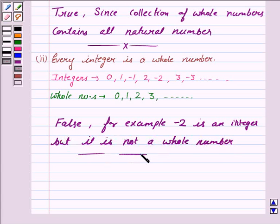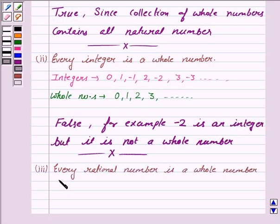So, this completes the second part. Now, the third statement is, every rational number is a whole number. Let us first understand what is a rational number.